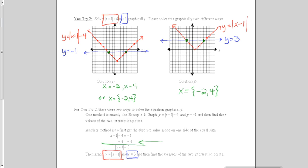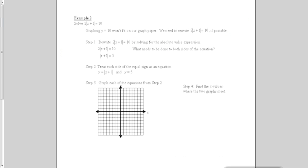Turn the page and we will try example 2. On this example, we're solving 2 times the absolute value of x plus 1 equals 10. But when we try to fit this on our graph paper, y equals 10 won't fit. So we need to rewrite this expression. We're going to get rid of the 2 out in front by dividing both sides of the equation by 2. When we do this, we'll have the absolute value of x plus 1 is equal to 5. Now we can graph both the left and the right sides of the equation as their own expressions, and see where they cross.